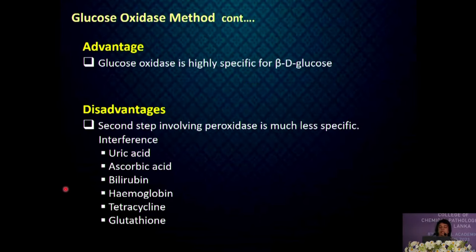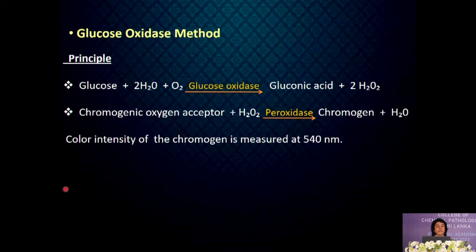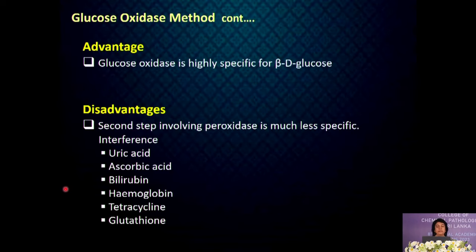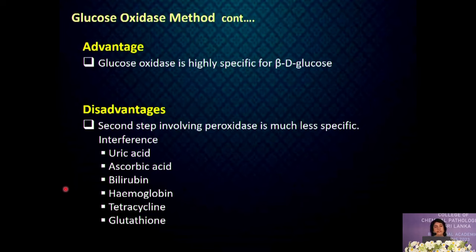The color intensity is measured at 540 nanometers. Glucose oxidase is highly specific for beta-D-glucose, but the second step involving the peroxidase enzyme is less specific. It can be interfered by substances such as uric acid, ascorbic acid, bilirubin, hemoglobin, tetracycline and glutathione, which compete for the chromogen and hydrogen peroxide, causing falsely low results. Nowadays, many automated method manufacturers have taken various steps to eliminate these interferences.